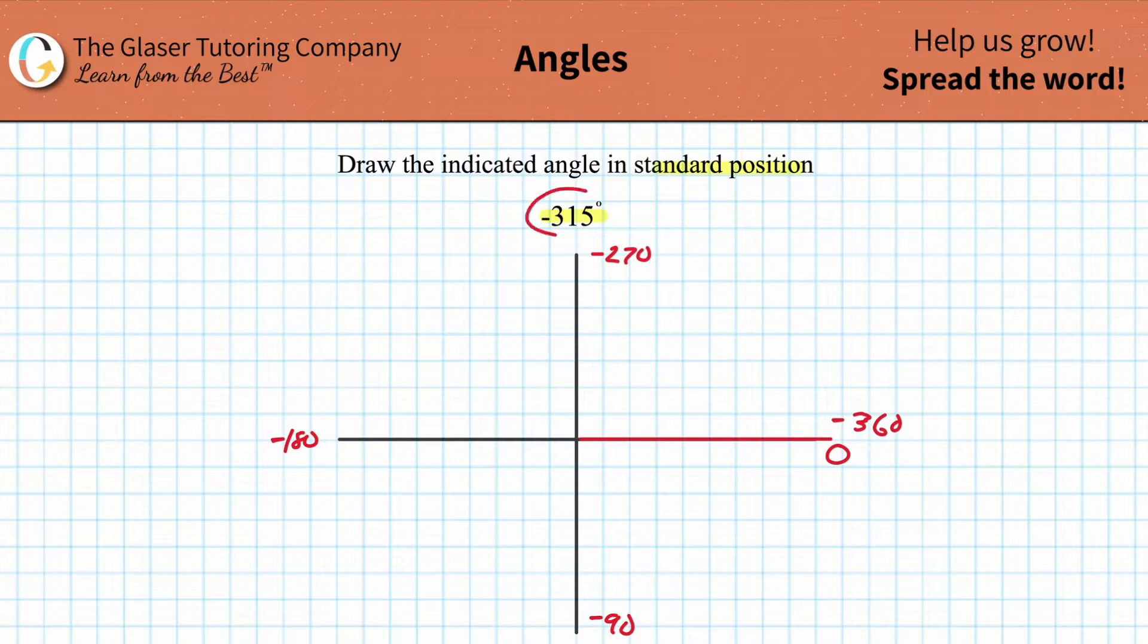I need to represent the negative 315 degree angle. If I rotate clockwise—here's 90, 180, 270—I better not go all the way to 360. I have to be short of that, so maybe somewhere in here. We're trying to rotate this angle: 90, 180, 270, and then stop right there.